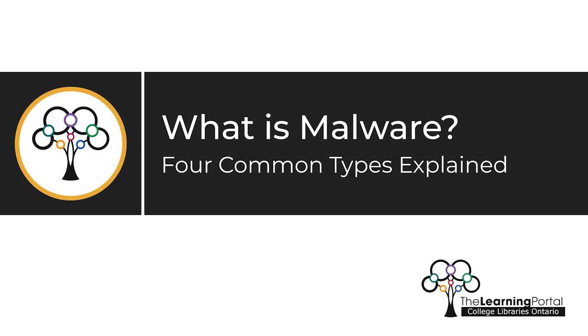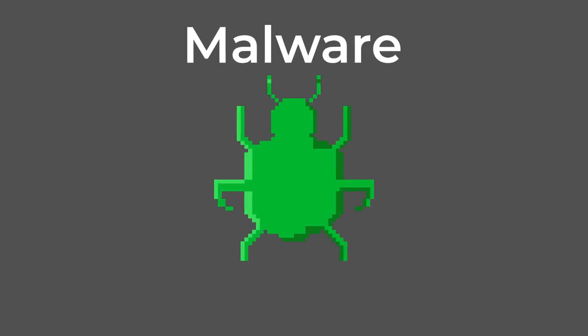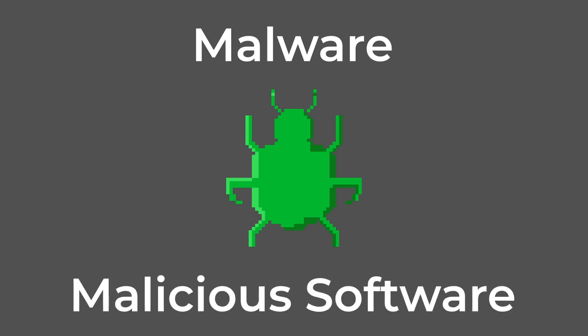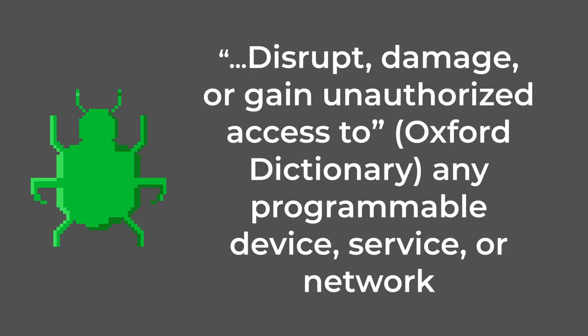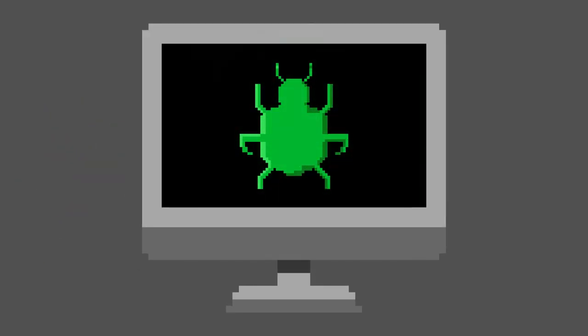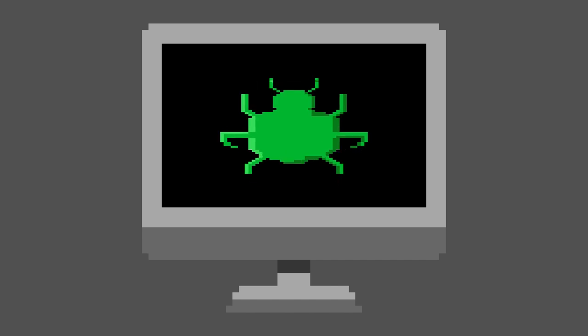What is malware? Four common types explained. Malware, or malicious software, is a blanket term for any kind of software that is intentionally designed to disrupt, damage, or gain unauthorized access to any programmable device, service, or network. There are millions of unique variants of malware, with new ones being created every day.